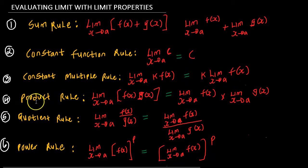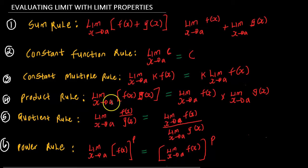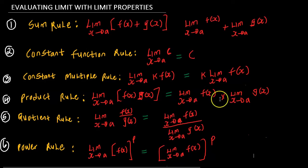The fourth rule is the product rule. This rule says the limit of the product of two functions is the product of their limits, as you can see.